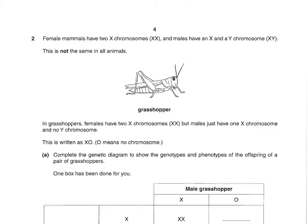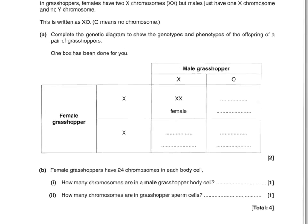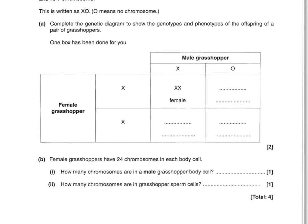Next question. Female mammals have two X chromosomes (XX), and males have an X and Y chromosome (XY). This is not the same in all animals. In grasshoppers, females have two X chromosomes, but males have one X chromosome and no Y chromosome, written as XO — O meaning no chromosome. Complete the genetic diagram. You're going to have X and O, X and X, and X and O in the boxes. Then you put male underneath the XO genotypes, and female underneath the XX genotype.